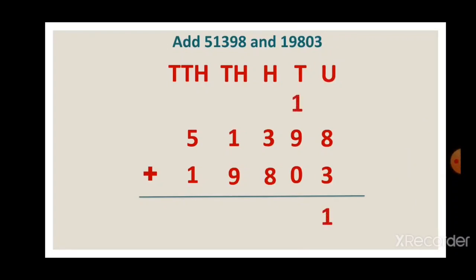Now the tens place: 1 ten plus 9 tens makes 10 tens, and 10 tens plus 0 gives 10 tens, which is 100 plus 0 tens. So we write 0 in the tens place and carry 1 over to the hundreds place. Now the hundreds place: 1 hundred plus 300 makes 400, and 400 plus 800 is 1200, meaning 1000 plus 200.